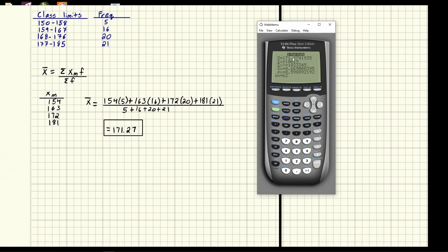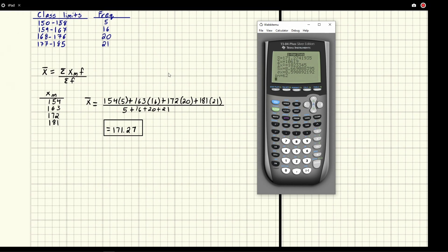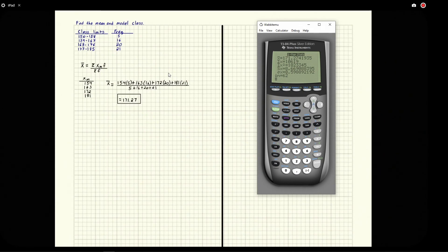However much you round is going to be dependent on your professor. Most want you to do between two and three decimal points somewhere around there. Some want more, some want less, just depends on your teacher. So there you go. That is how you do this. Now that's just the mean though.